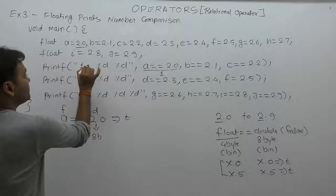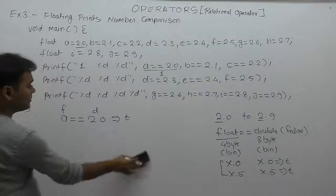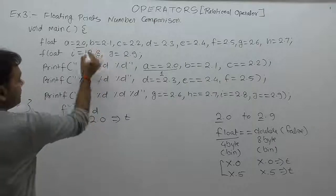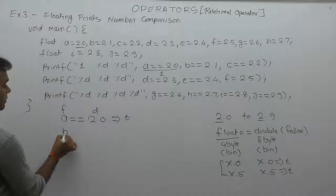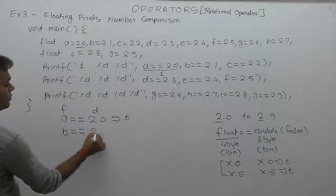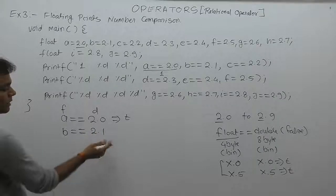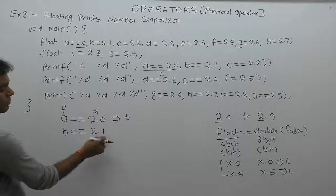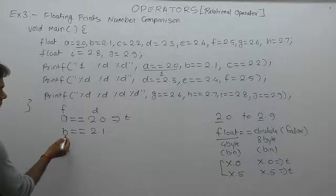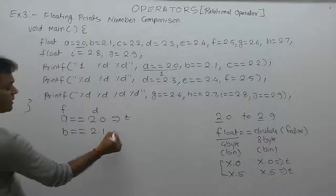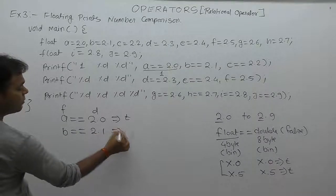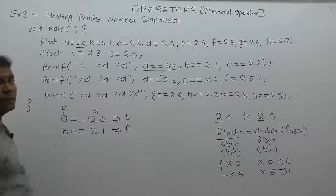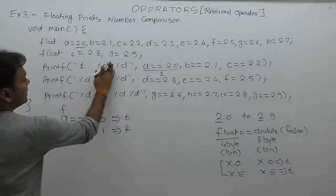Next, second comparison with respect to b. In case of b, b equal to 2.1. This case point one, float versus double, same value but binary representation different. Therefore, results will be false. Second case result is false, false means zero.